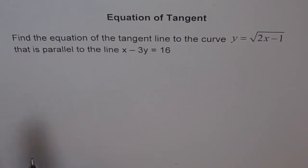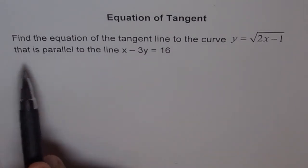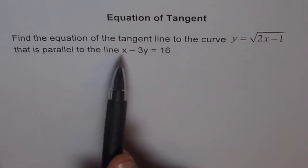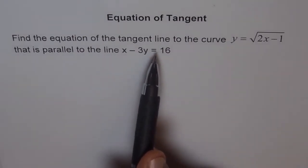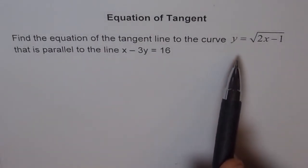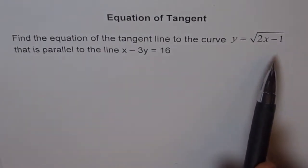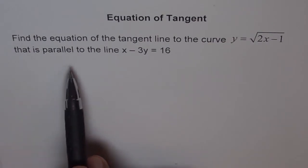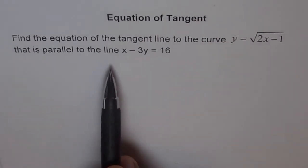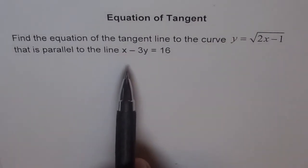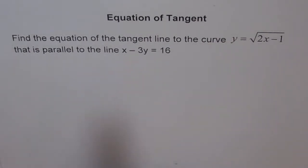Here is a question to find the equation of a tangent. Find the equation of the tangent line to the curve y equals square root of 2x minus 1, that is parallel to the line x minus 3y equals 16.